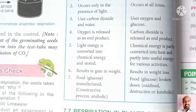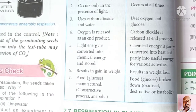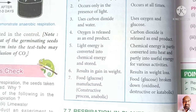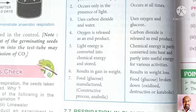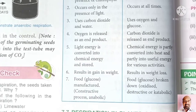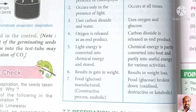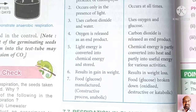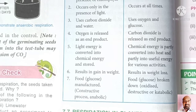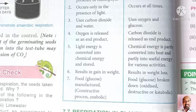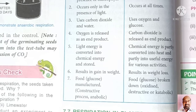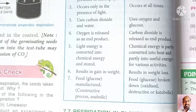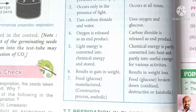In photosynthesis, light energy is converted into chemical energy. In respiration, chemical energy is converted into heat energy and other useful forms of energy used by the body for various activities. As a result of photosynthesis, there is a gain in weight, whereas due to respiration, there is a loss in weight.